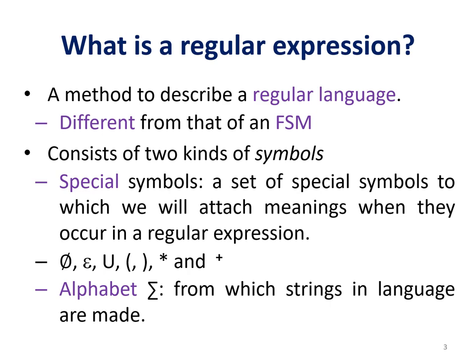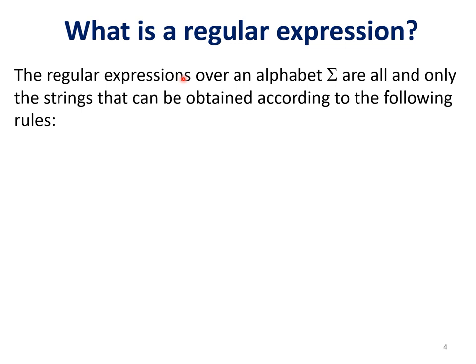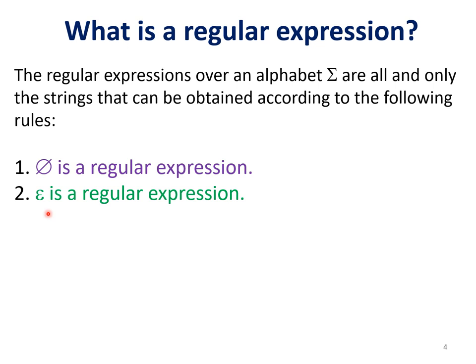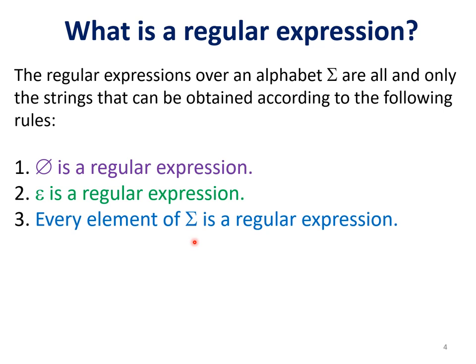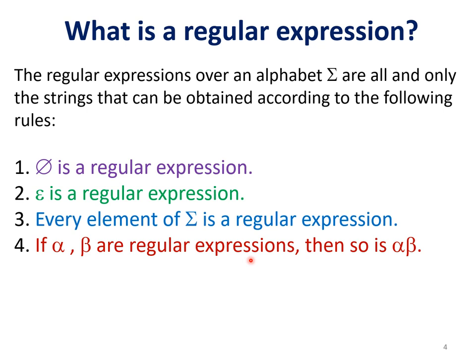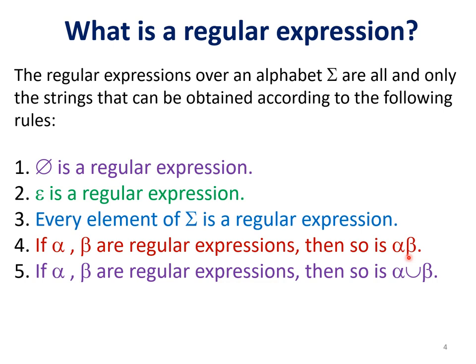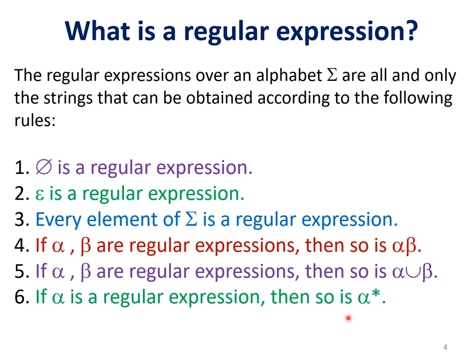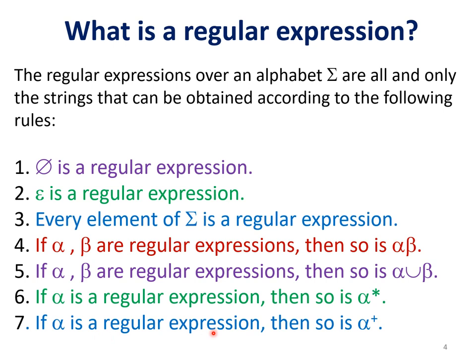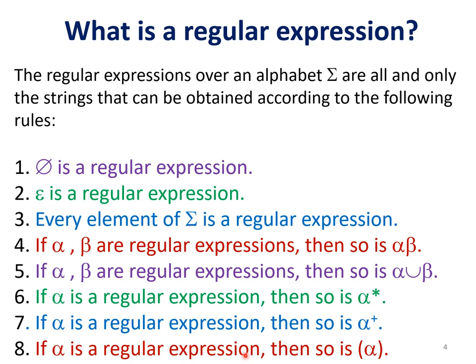The regular expressions over alphabet Σ are all and only the strings that can be obtained according to the following rules. First, null is a regular expression. Epsilon is a regular expression. Every element of Σ is a regular expression. If alpha and beta are regular expressions, then alpha dot beta is also a regular expression. Alpha union beta is also a regular expression. If alpha is a regular expression, then alpha-star, alpha-plus, and alpha in parentheses are also regular expressions.